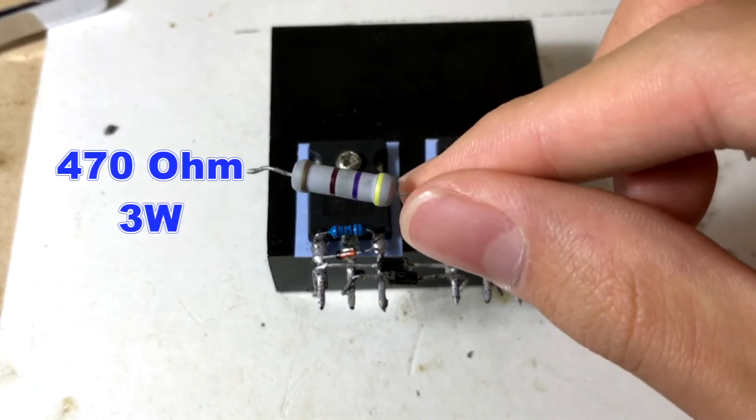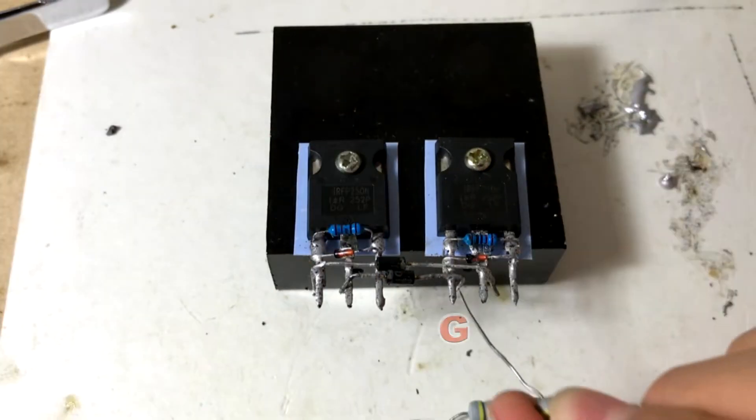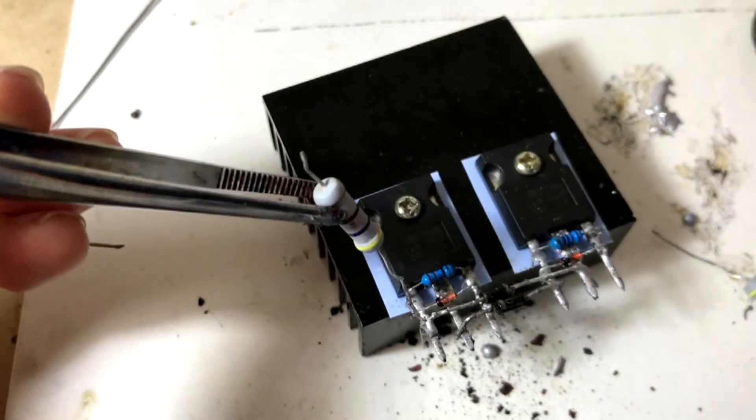Take out your 470 ohms, 3 watts high power resistors. We want to solder both of them to the G pin of the MOSFETs.